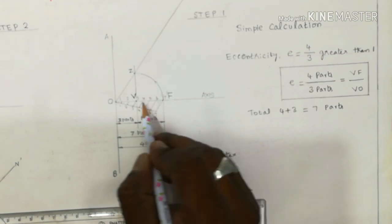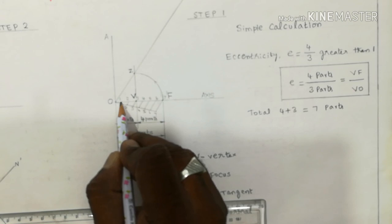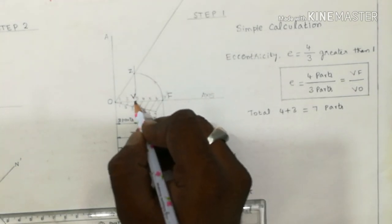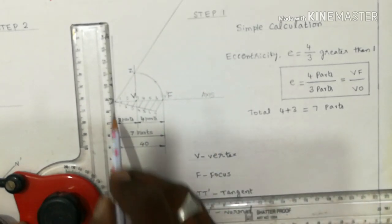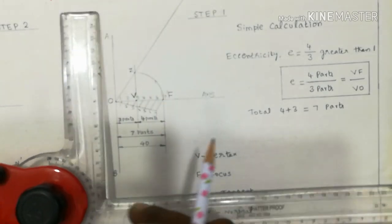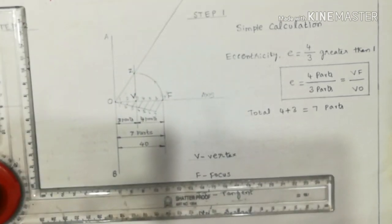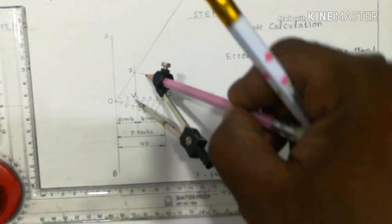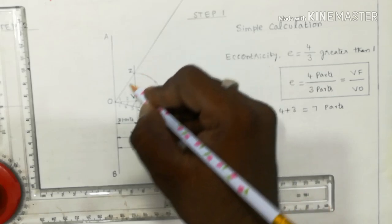From point 3 to 4 is one part, 4 to 5 is one part, 5 to 6 one part, 6 to 7 one part — so VF has 4 parts and VO has 3 parts. The point V is now located as the vertex. Through V, draw a vertical line parallel to the directrix. Using V as center, cut this vertical line; that point is marked as Z. Join O and Z and extend the line further.